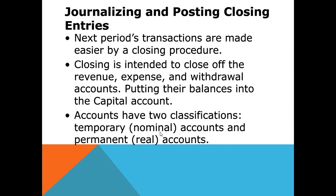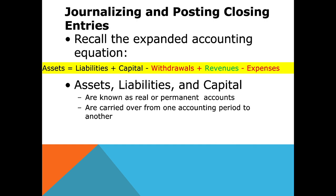Accounts have two classifications: temporary, also called nominal accounts, and permanent, also called real accounts. Recall from the first video the expanded accounting equation: assets equals liabilities plus owner's equity. Owner's equity encompasses capital, which represents the owner's worth. From that you subtract withdrawals, add revenues, and subtract expenses. The income statement shows revenue minus expenses. The statement of owner's equity shows net income or net loss, minus withdrawals, plus beginning capital to get ending capital.